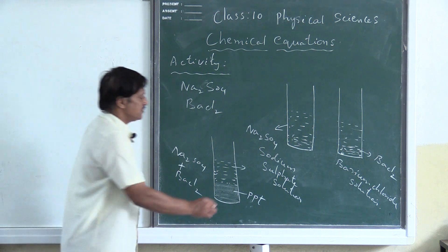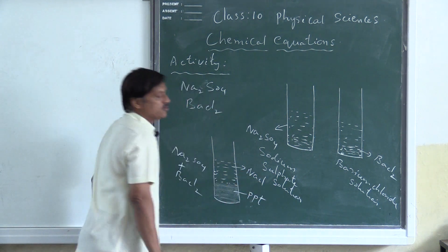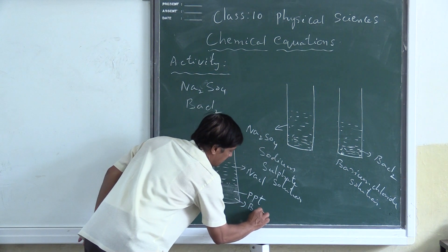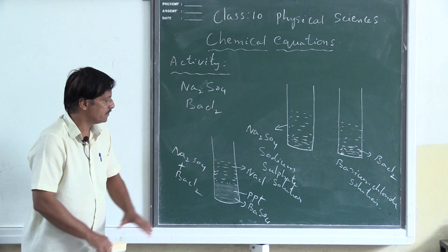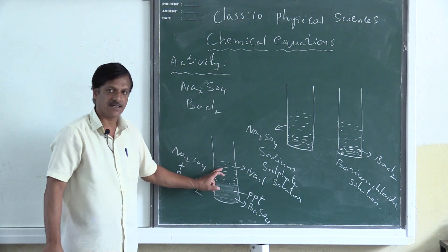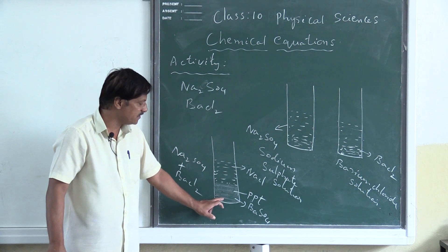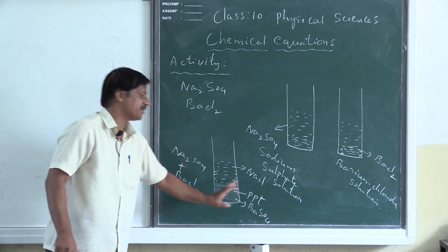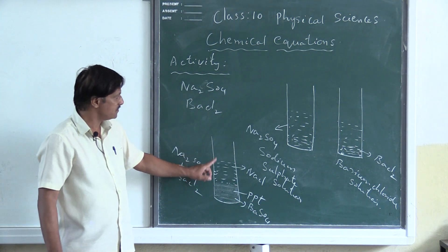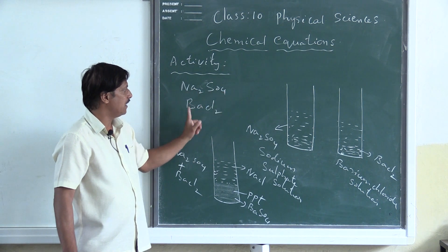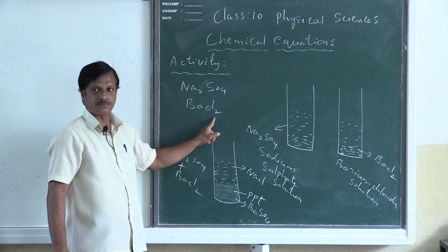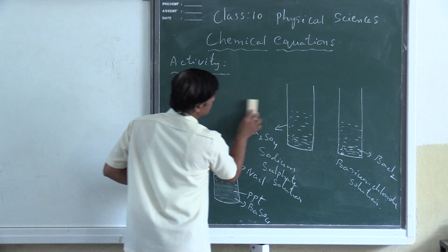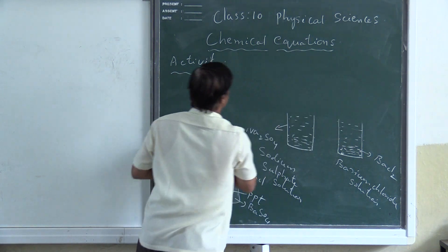That colorless liquid floating above is nothing but sodium chloride solution. The precipitate formed at the bottom is called barium sulfate precipitate. So the reaction is taking place between sodium sulfate and barium chloride, giving sodium chloride and barium sulfate.